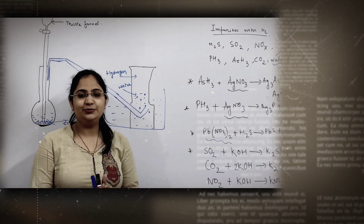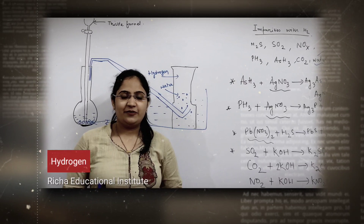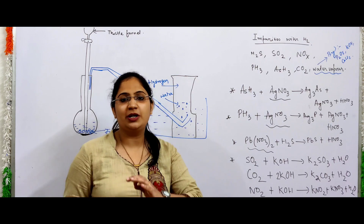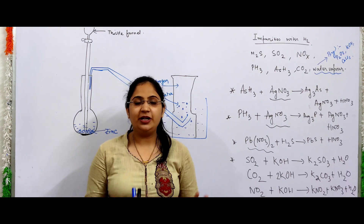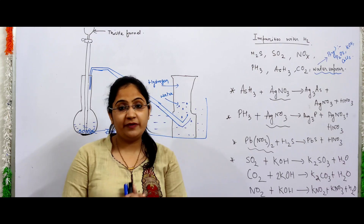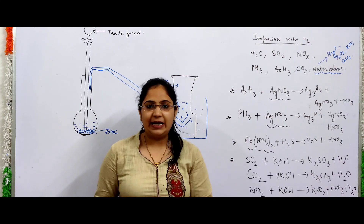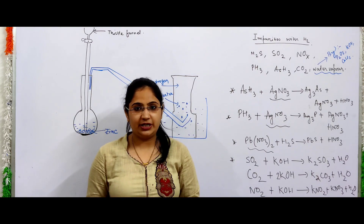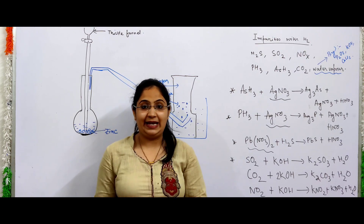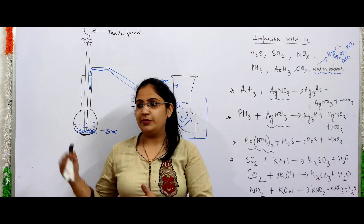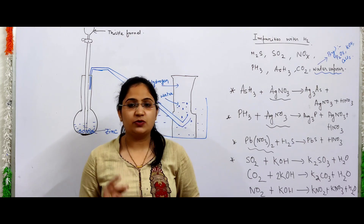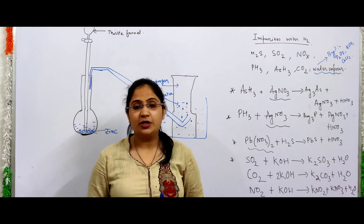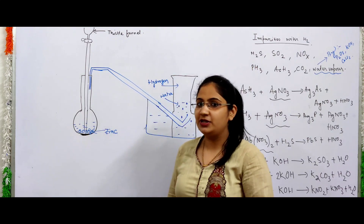Hello everyone, how are you? Today we are going to continue our video for class 9 ICSC students on the hydrogen chapter. We have already discussed 12 parts, so today we are going to discuss the preparation of hydrogen by metal and acid. Keep watching till the end to learn how hydrogen is prepared, what process we follow, and what precautions we take.